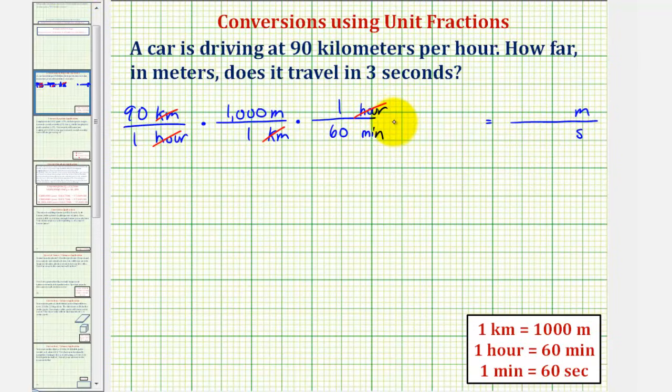So we multiply by another unit fraction. We want minutes to simplify out, so we'll have minutes in the numerator and seconds in the denominator. And our conversion is that one minute equals 60 seconds. Minutes simplifies out. Notice how now we have the correct units.